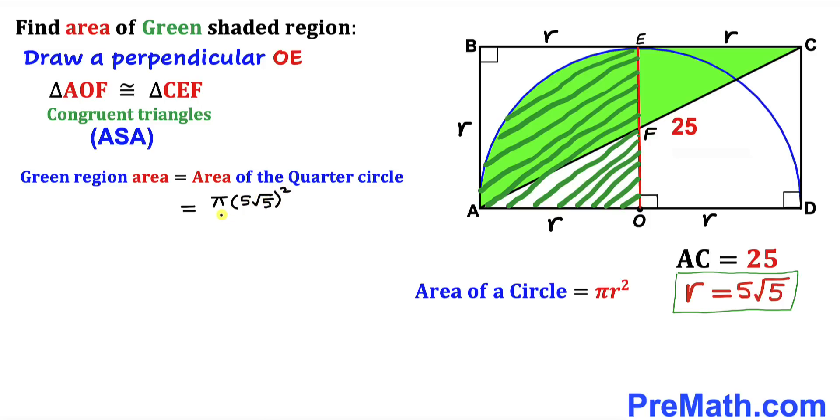And since we are dealing with this quarter circle, we are going to divide it by 4. And now we know that the square of 5√5 is going to be 125. So therefore we are ended up with 125π/4. So therefore the green shaded region area turns out to be 125π/4 square units. And if we replace this π value...